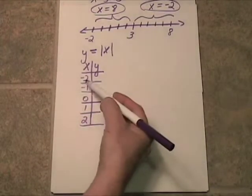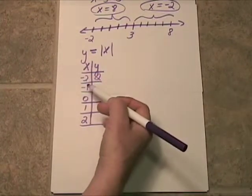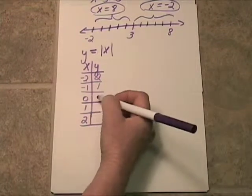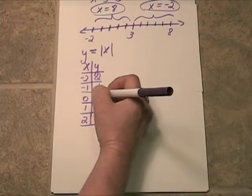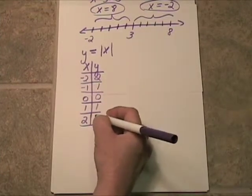Now, the absolute value of negative 2 is 2, because negative 2 is 2 jumps away from 0. And this would be 1. Absolute value of 0 is 0, because 0 is no jumps away from 0. And then 1, and then 2.